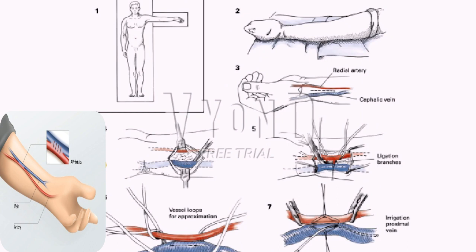The surgeon palpates the radial pulse and the location of the incision is planned. A vertical incision is made in the forearm close to the wrist and lateral to the radial pulse. Once the incision is carried to the deep subcutaneous tissue, self-retaining retractors are placed. Sharp and blunt dissection are used to identify the cephalic vein. The vein is skeletonized for a distance of 2 to 3 cm, encircled with vessel loops proximally and distally, and side branches are ligated with 4-0 silk.